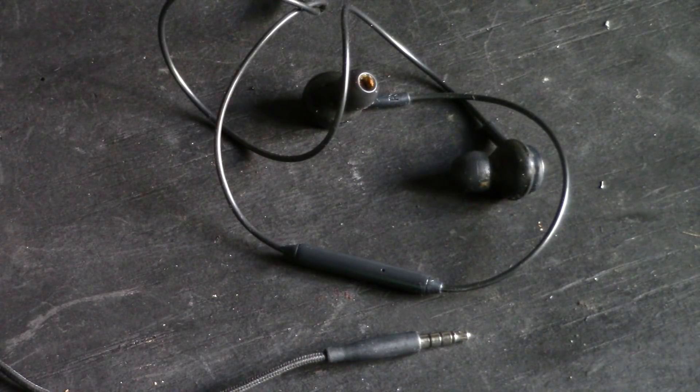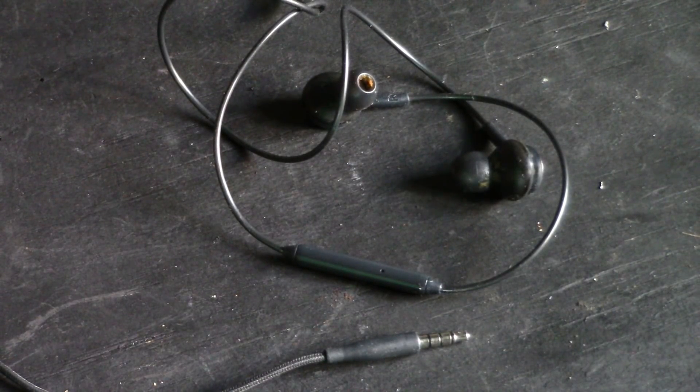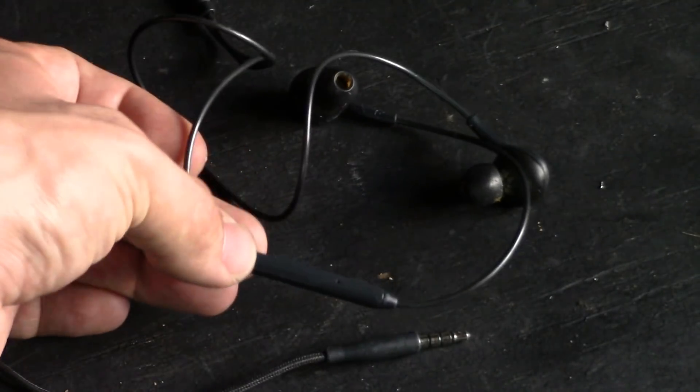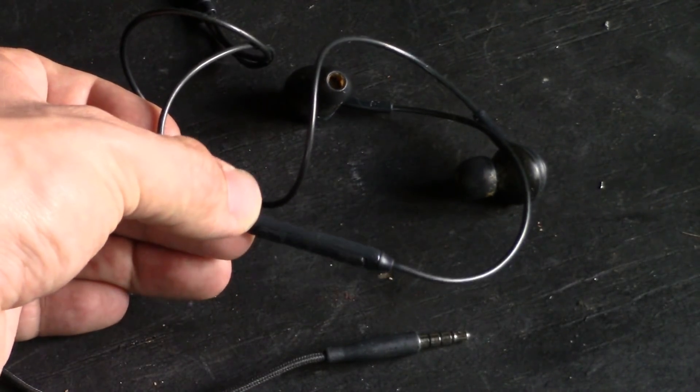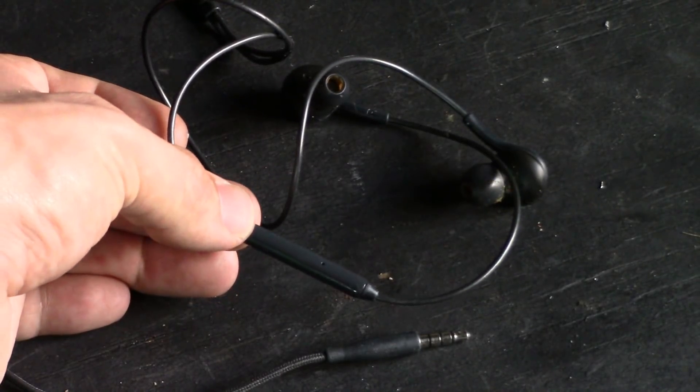The smartphone will typically come with a set of earbuds which aren't just earbuds but also have a module with a built-in mic. This one also boasts a volume control but we're interested in the type that has a built-in mic.